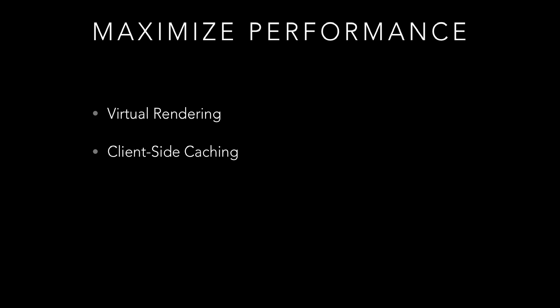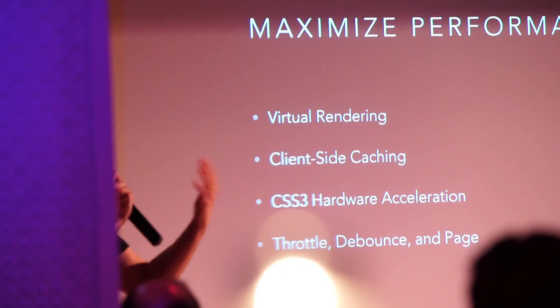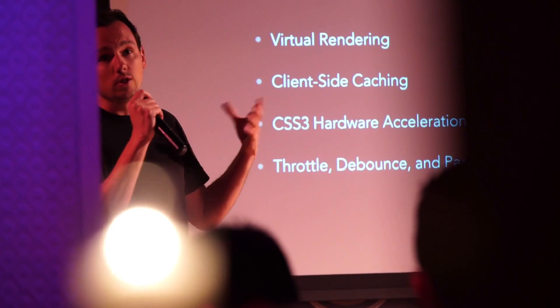Next, client-side caching: things you are consistently looking up, you want to store using local storage or web storage. CSS3 hardware acceleration: when people use jQuery animate to move things across the screen, they're robbing the user's computer of processing power needed for handling market data or updating views. Instead, learn how to use CSS3 3D transforms. And finally, recognize that humans can only consume so much data at a time — so throttle and debounce. These aren't problems unique to HTML5; anyone who's built a trading application will have had the same experience.